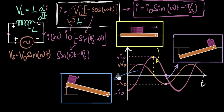So the moral of the story is: like masses, inductors have inertia. They hate changes in current. And because of that, the current lags behind the voltage by an angle of π/2.